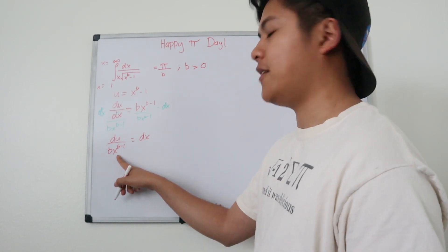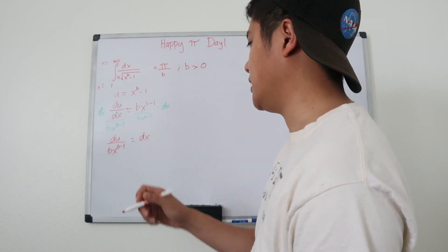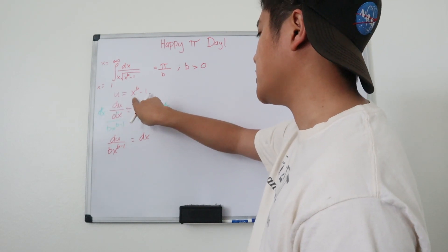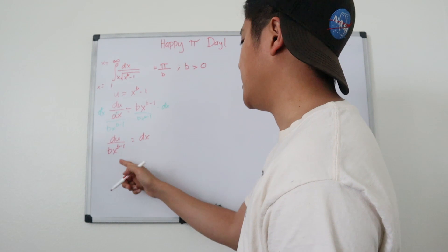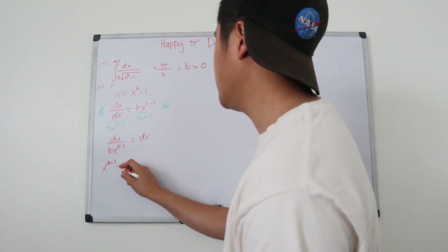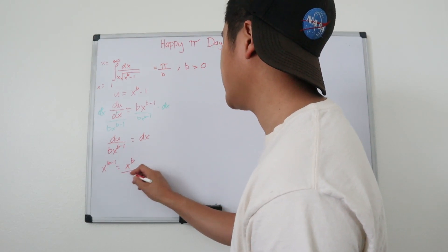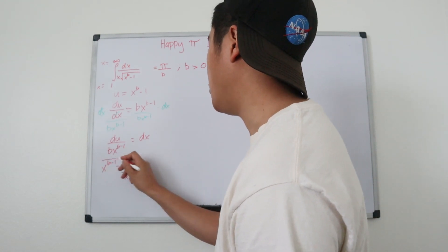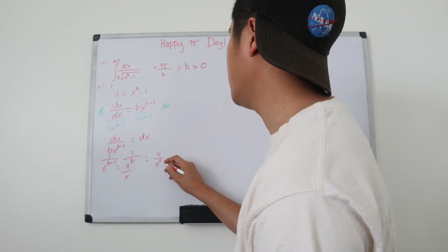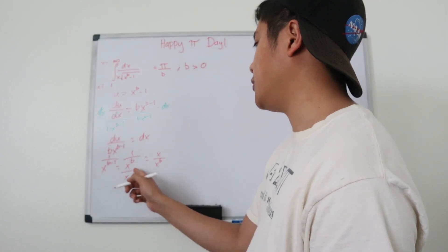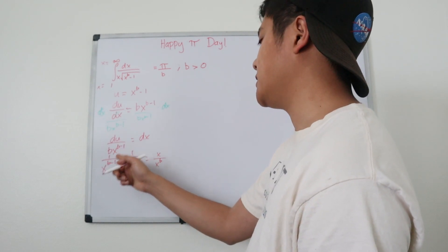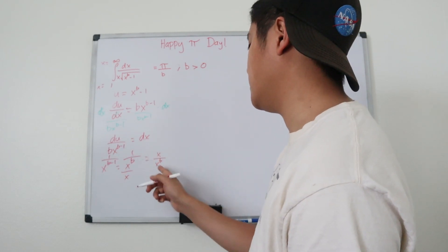We want to rewrite the entire left-hand side in terms of u. To do that, we refer back to our substitution and simplify. Note that x to the b minus 1 equals x to the b divided by x, so 1 over x to the b minus 1 equals x over x to the b. So we rewrite the differential as x·du over b·x to the b.